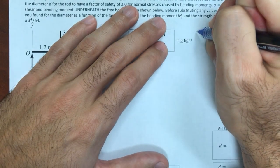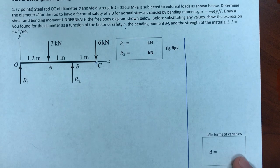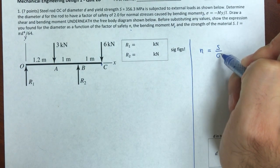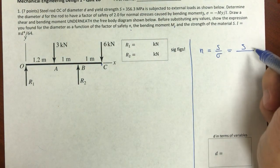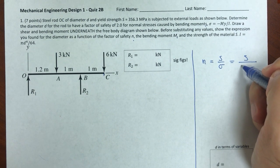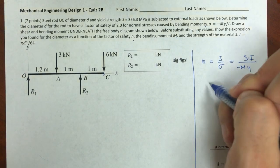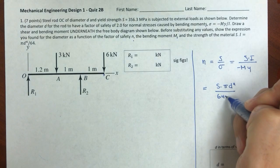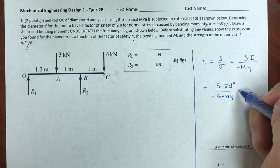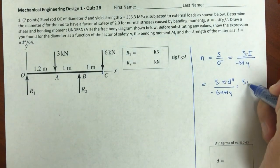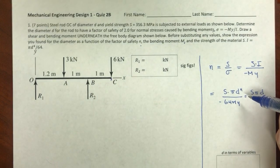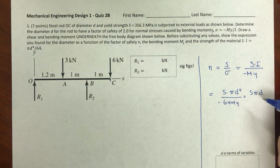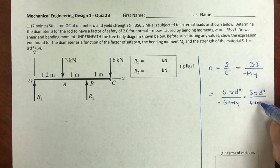I'll use this space to the right to come up with that expression. The factor of safety is the strength of the material over the stress. The stress from bending moments is σ = My/I. I also know that I = πD⁴/64. The value y is the distance from the neutral axis to where I'm calculating the stress — for maximum stress, that's on the surface of the rod, so y equals D/2, which is a radius.